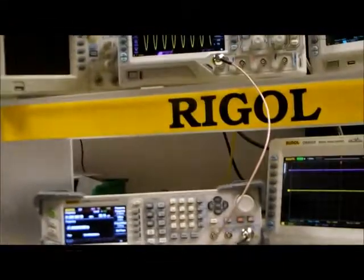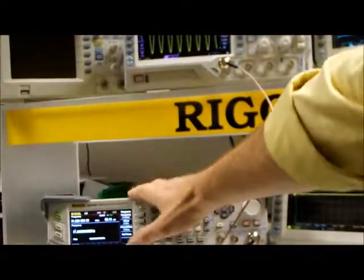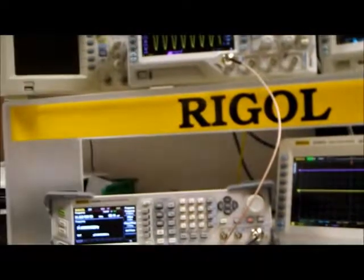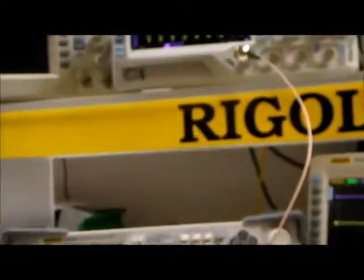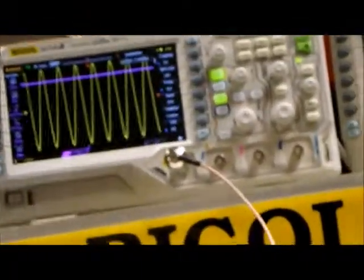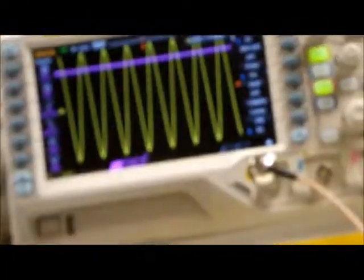What we're going to do is take a look at the 3dB point of this oscilloscope. I've got it hooked up right now to this Rigol DSG3000 generator which is set to 31MHz, but let's have a closer look at the screen of the DS1000Z.